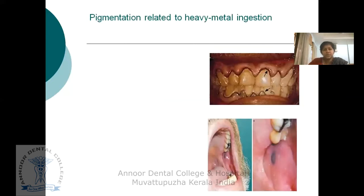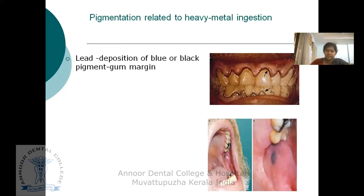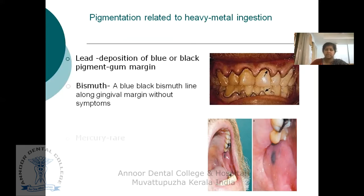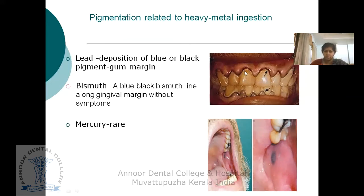Next is pigmentation related to heavy metal ingestion. Heavy metals such as lead, bismuth, mercury, etc. can cause pigmentation on the oral mucosa. Lead deposition is seen on the gum margin as blue or black pigment, and this pigmentation is also known as plumbism. These pigments are deposited on the free gingival margin, appearing like eyeliner application.